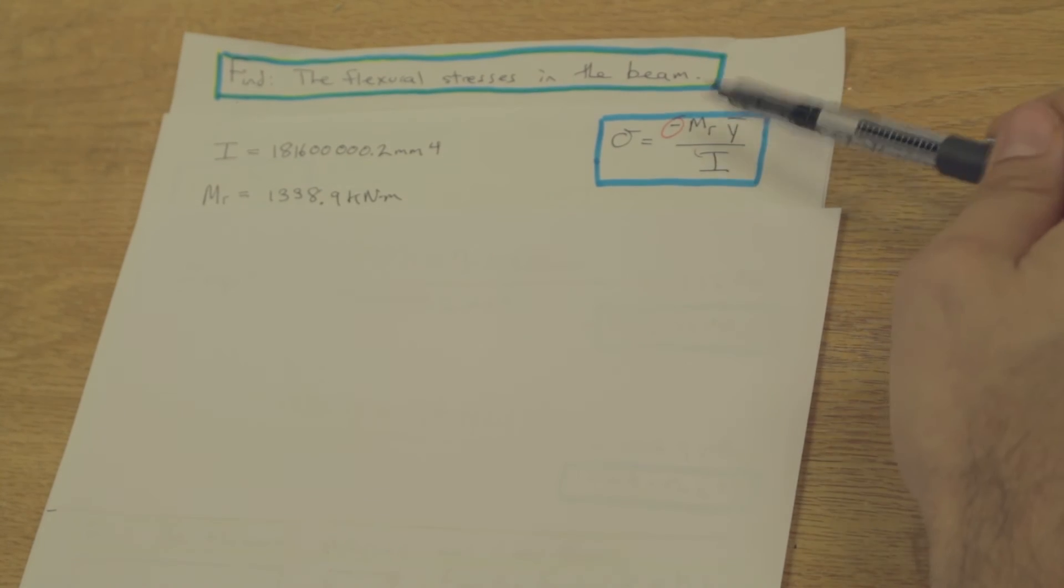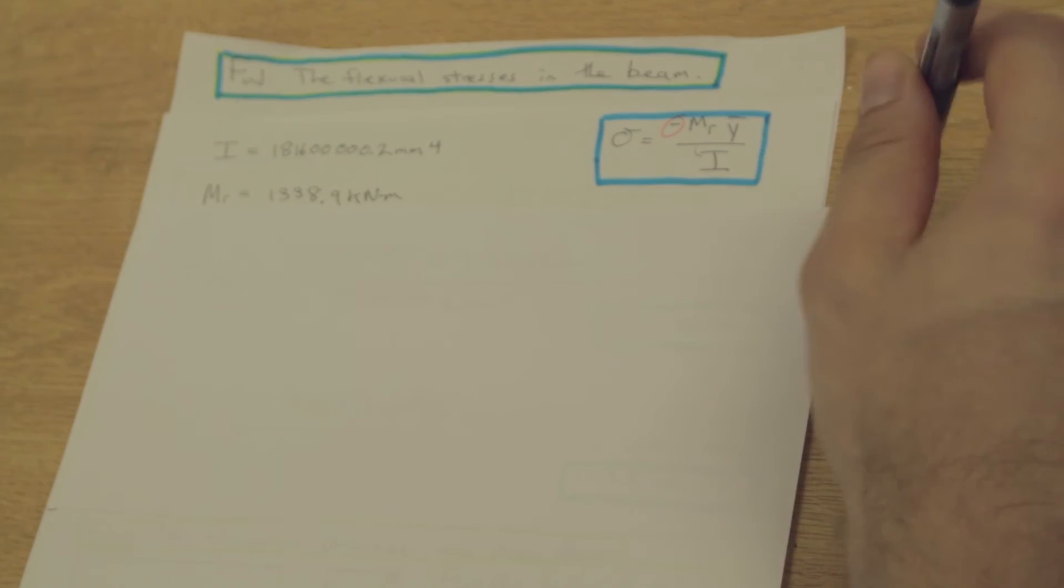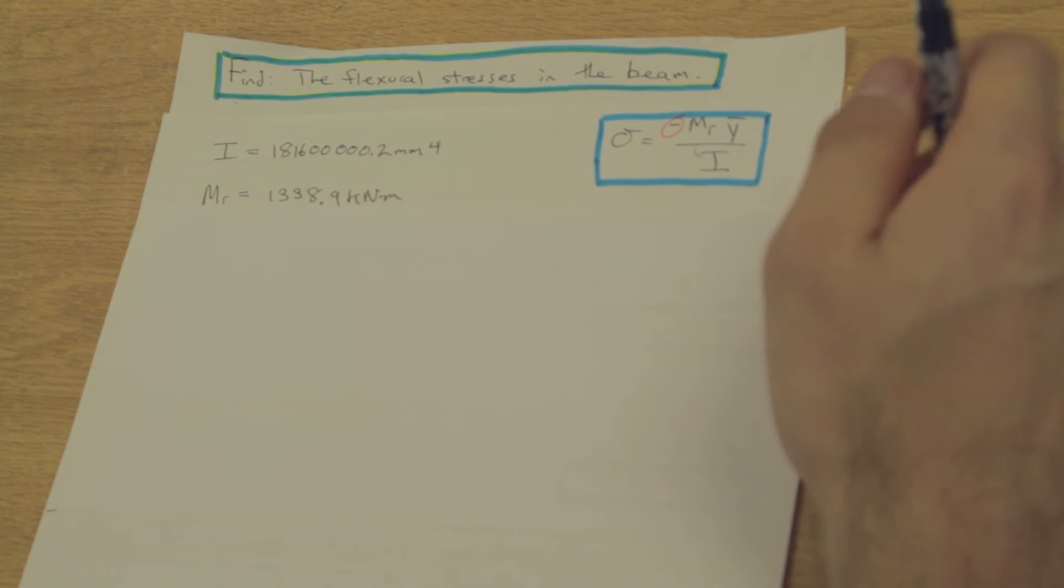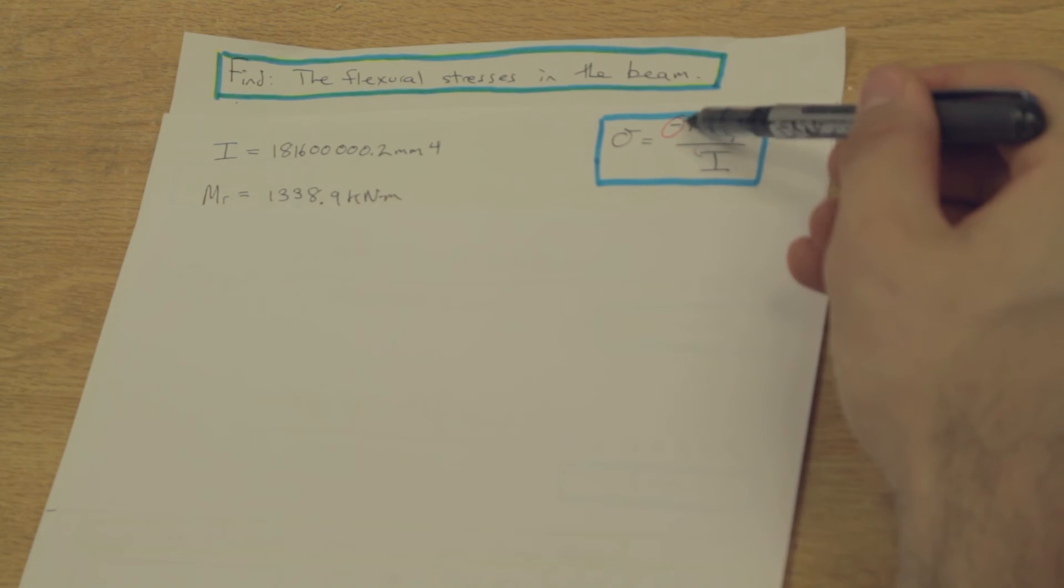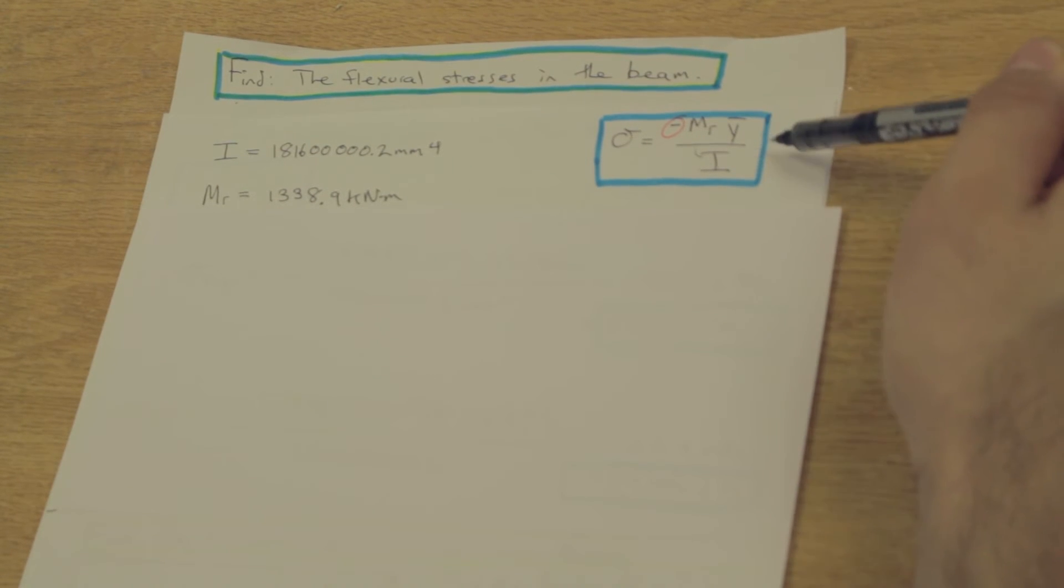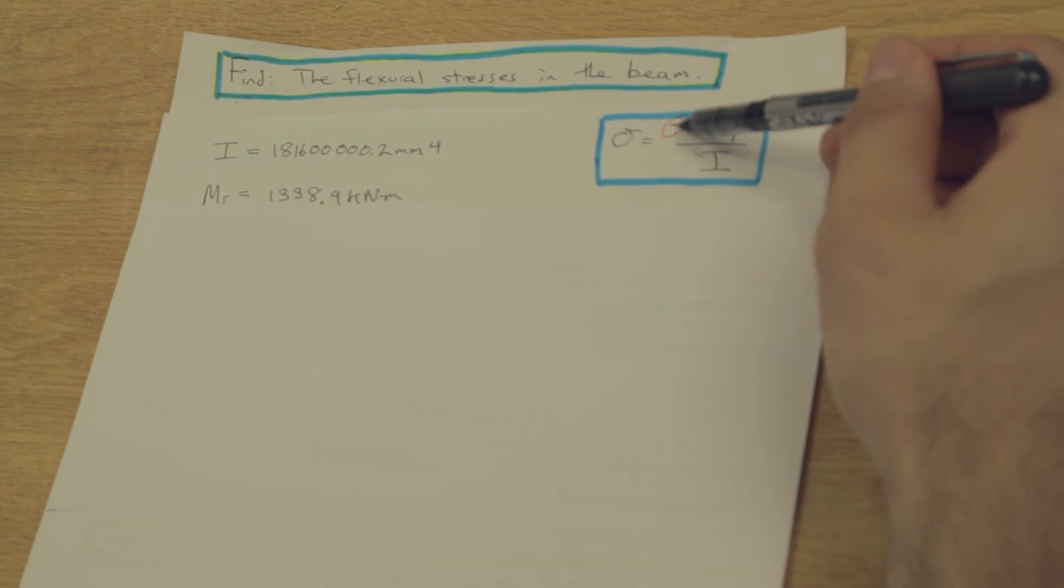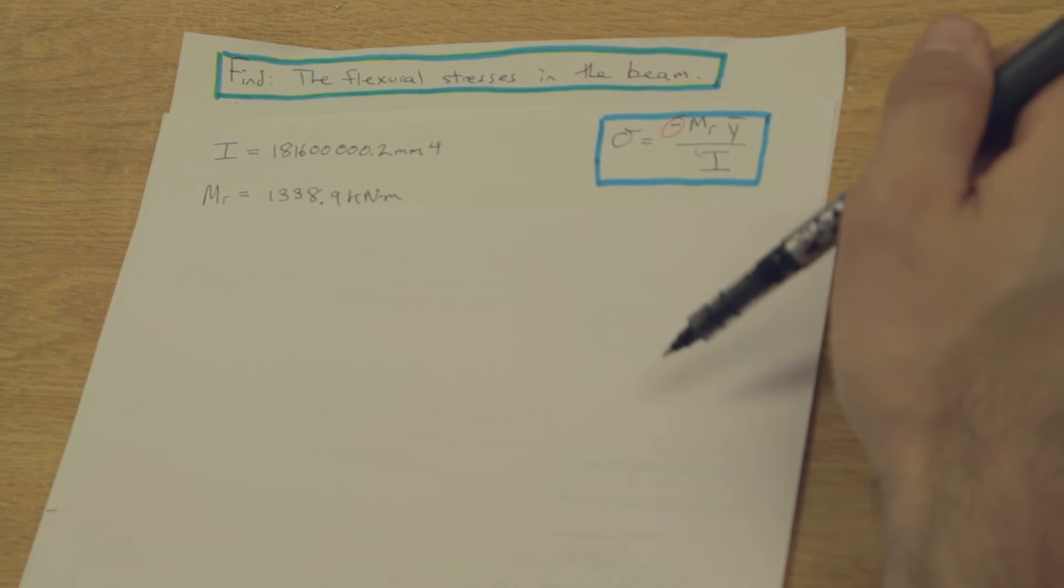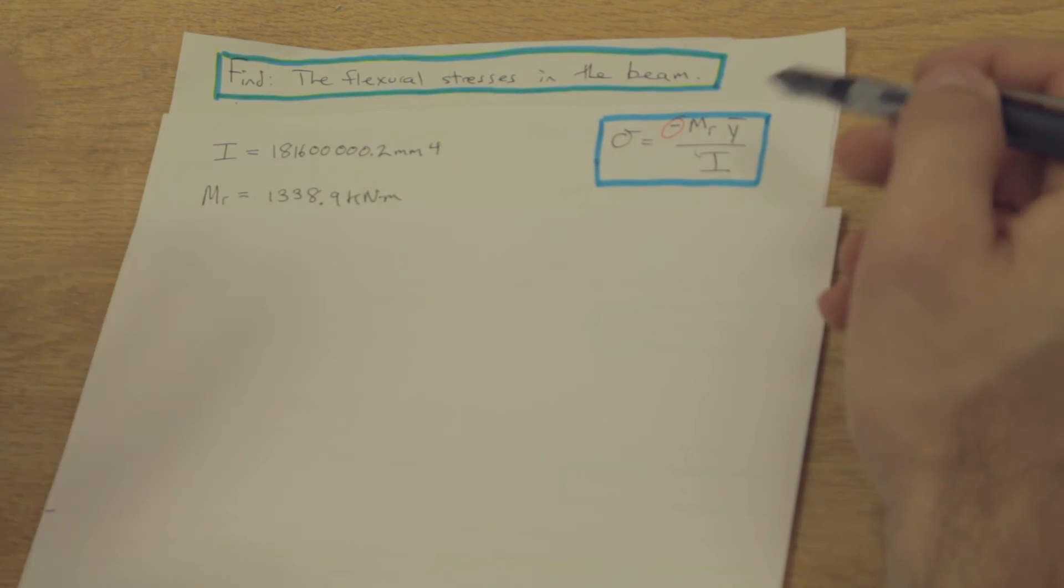This is our flexural stresses formula. Sigma equals negative mR y bar over i, okay? Watch out for this negative. Leave the negative in there, and plug in everything with its signs. And if you get a negative value, that's going to be compression, and if you get a positive value at the end, that's going to be tension. Just standard sign convention, but leave that negative in there, okay? Otherwise, it gets quite confusing.